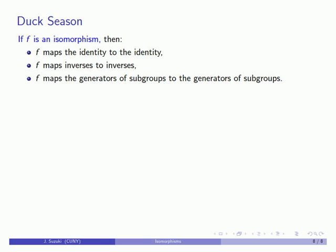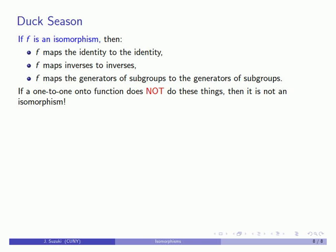If I have a one-to-one onto function that does not do these three things, then I can't have an isomorphism. What I have is not a duck.